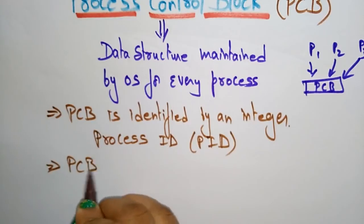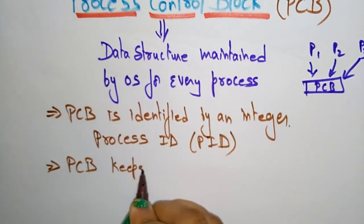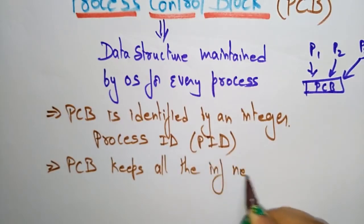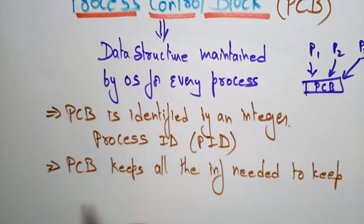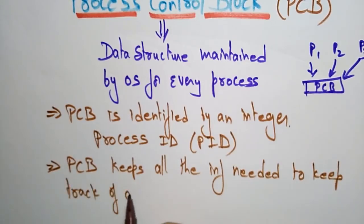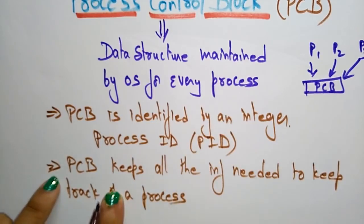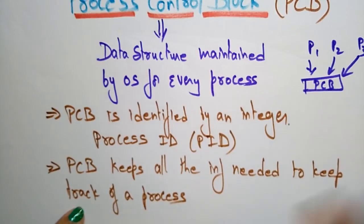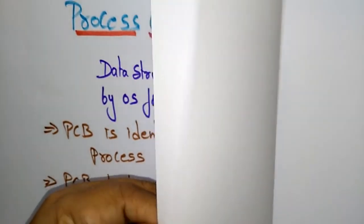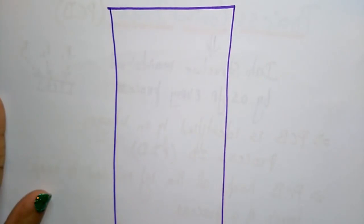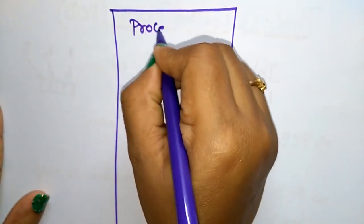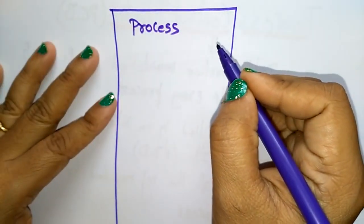The use of the Process Control Block is to keep track of all the information needed for a process. The PCB stores all related information of a process. Let us look at what type of information this Process Control Block stores.